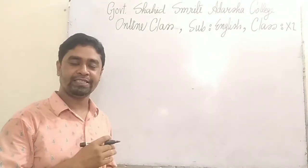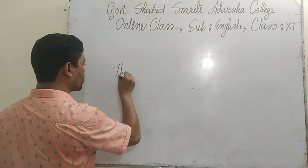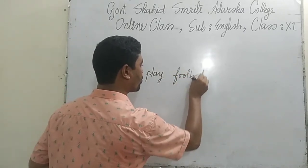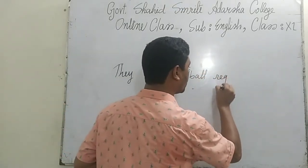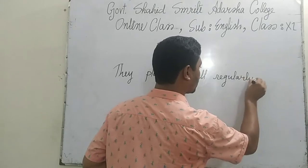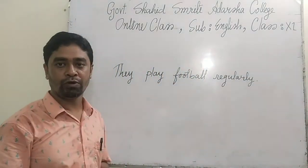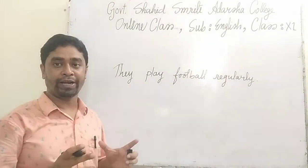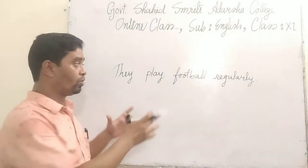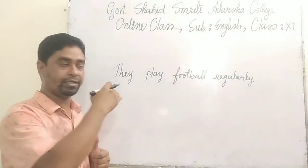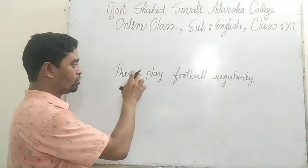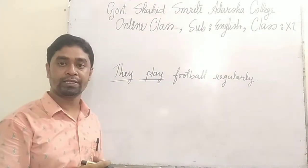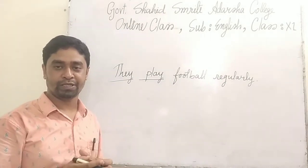Now I am writing a sentence on the board as an example: 'They play football regularly.' It is a sentence because in this sentence we find a group of words; these words are arranged in proper order; and in this sentence you also find a subject and a finite verb; and these words express a complete meaning. So we can say that it is a correct sentence.